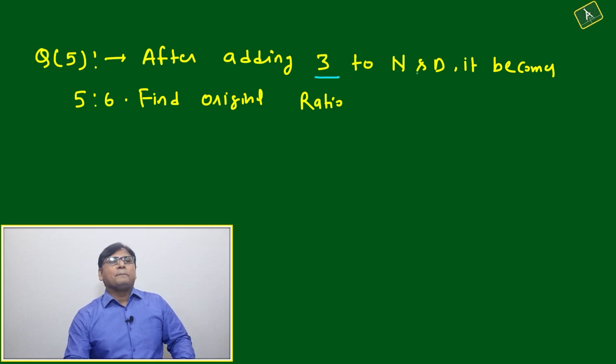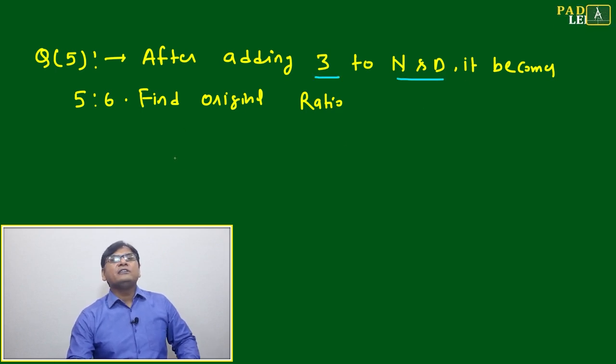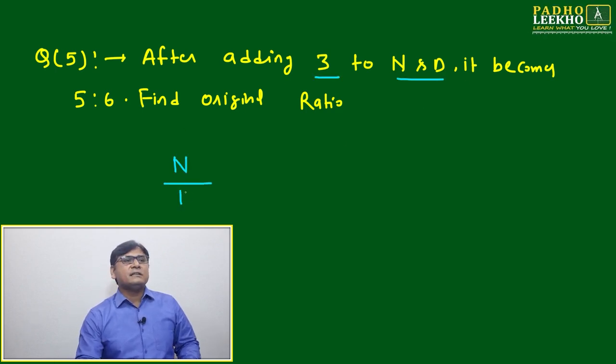Now we'll come to question number 5. After adding 3 to numerator and denominator, it becomes 5 ratio 6. So N by D, we have added 3 here and 3 here, it has become 5 by 6.